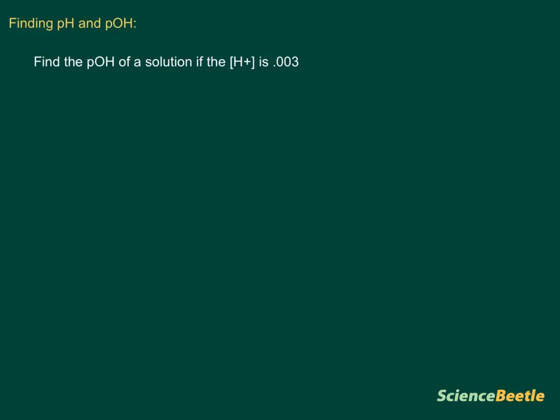We've got this problem here, and what we need to do is begin identifying what we know. We know that we have a hydrogen ion concentration of 0.003, and we need to first use this information to find our pOH.